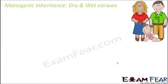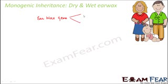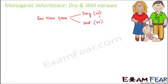Let us look at the genetics of the earwax gene. The earwax could either be dry or wet. The wet earwax is represented by the allele capital W, and the dry earwax is represented by the allele small w. These are the two alleles of the earwax gene.